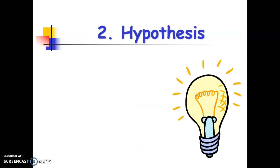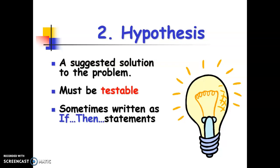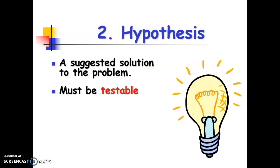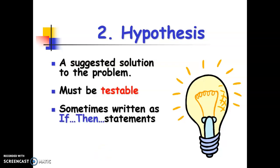So now we need to form our hypothesis. A hypothesis is a suggested solution to a problem. So think about our salamanders and what might be the suggested solution. A hypothesis must be testable. So it's not something we can just make a simple statement. We have to be able to test that statement to see if there is a relationship, a cause and effect. Sometimes a hypothesis is written as an if-then statement, but not always. But when we're first starting out and writing a hypothesis, sometimes it's easier to write an if-then statement.